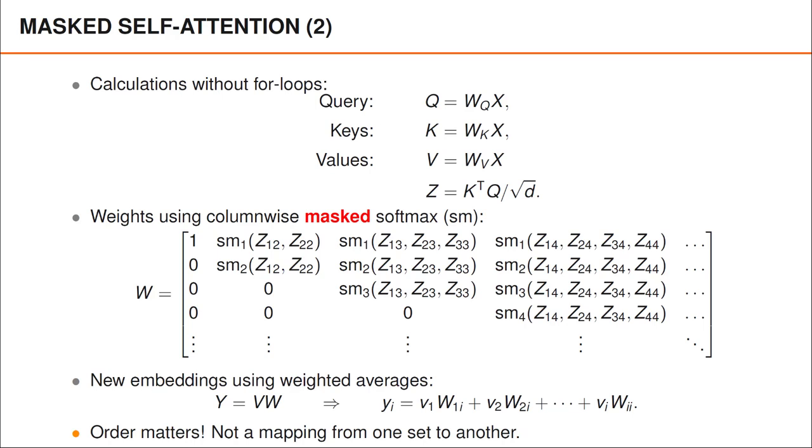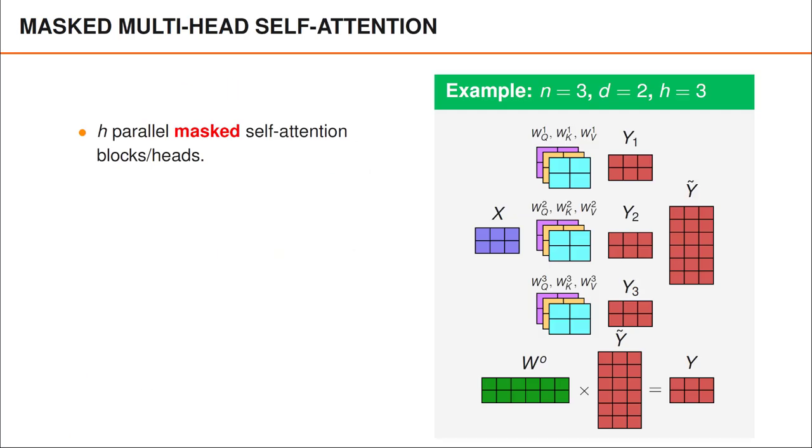However, we also note that the order of the input vectors is important when we use masked self-attention, and we no longer have a mapping from one set to another. So far, we have learned about masked self-attention, and the decoder combines h of these into the masked multi-head self-attention layers.